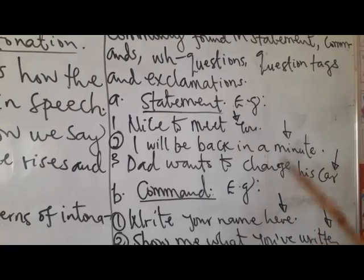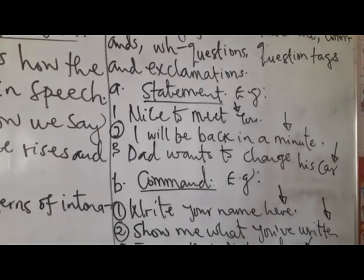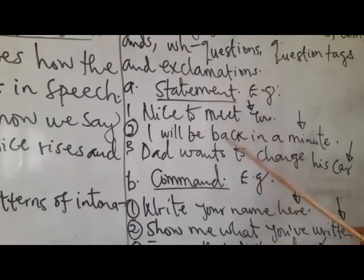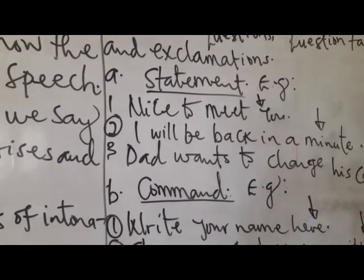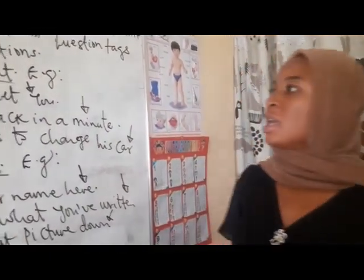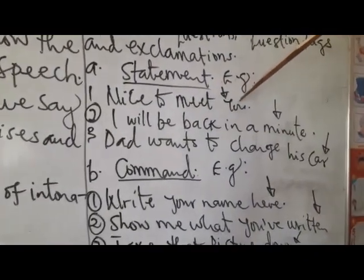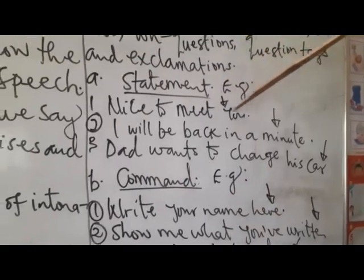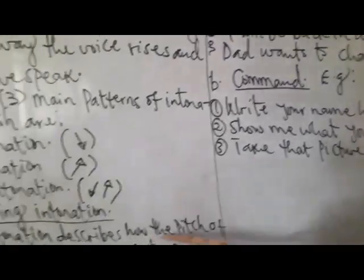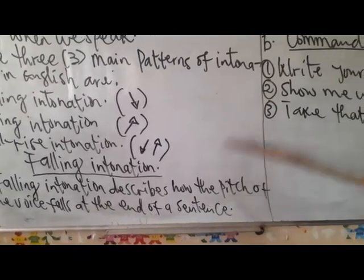Let's look at each example and please take note of the arrows at the end of each sentence. For statements: 'Nice to meet you.' Look at the arrow here — it is facing down, at the end of the sentence on the word 'you.' Remember, falling intonation describes how the pitch of the voice falls at the end of a sentence.